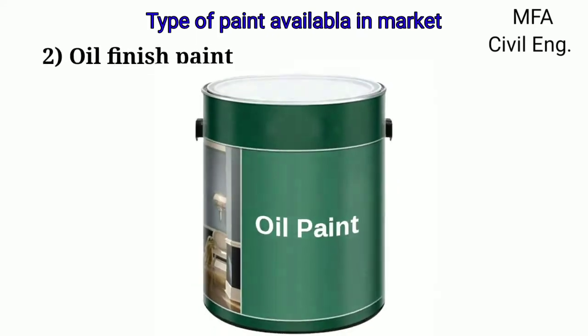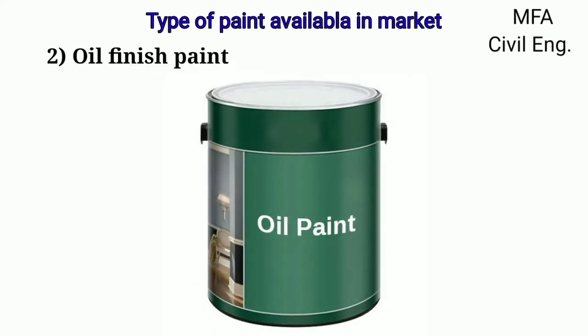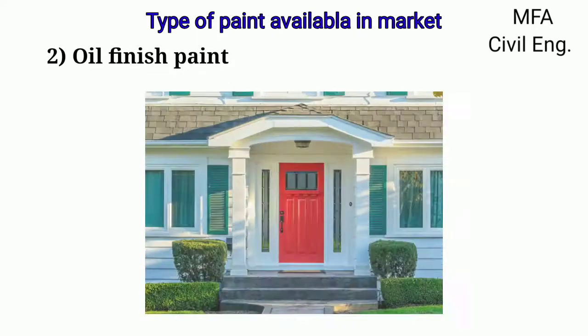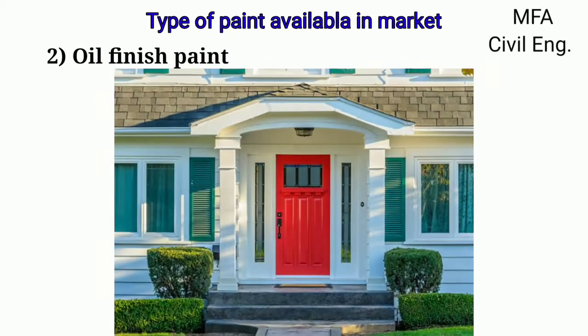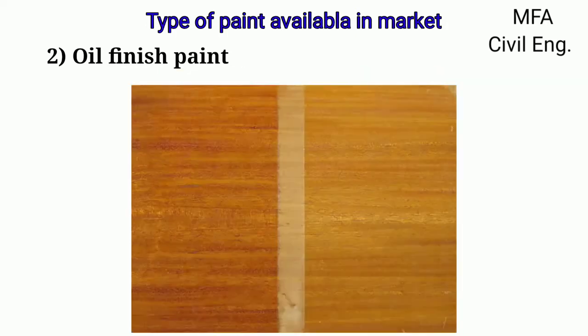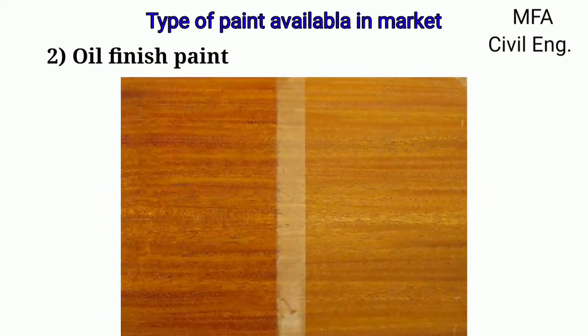Oil finish paint are oil based paints and are also ideal for house exterior painting. They shrink less when dry and are also more durable. The problem with oil based paint is that the colors tend to fade fast.